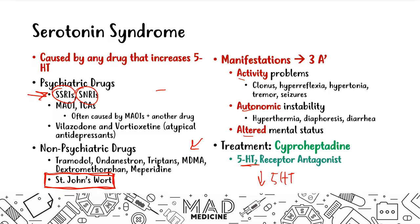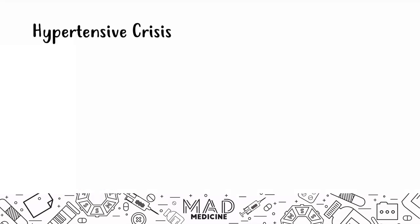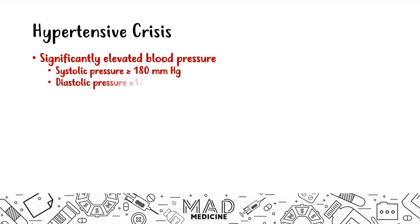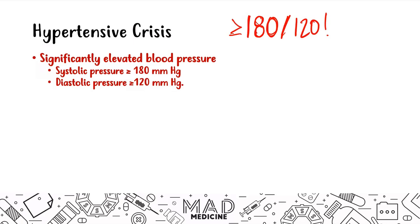That is serotonin syndrome in a nutshell — it is pretty high yield, and I got several questions about it while studying for Step 1. The next emergency is hypertensive crisis, defined as a significantly elevated blood pressure with systolic over 180 and diastolic over 120. The key giveaway is someone presenting with blood pressure greater than or equal to 180 over 120.